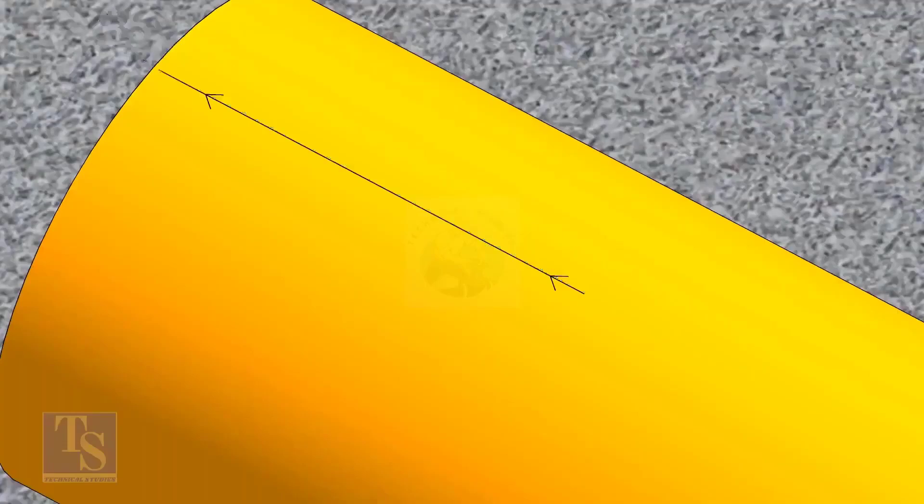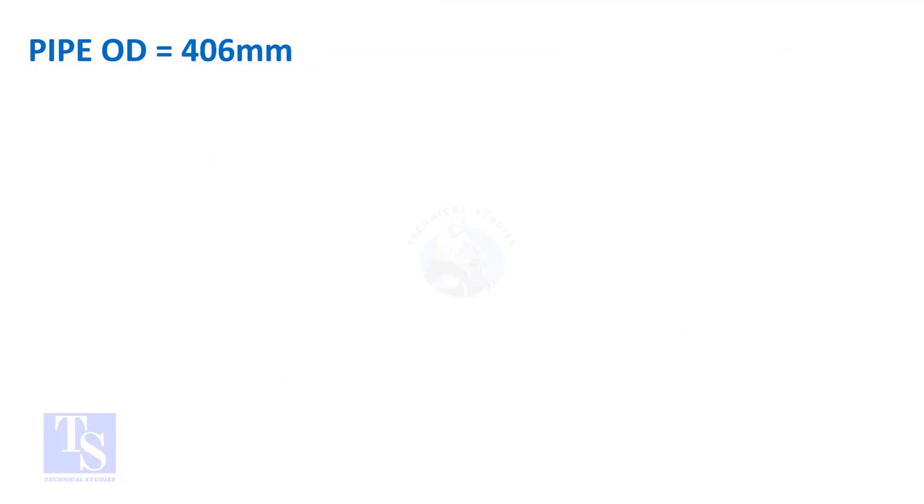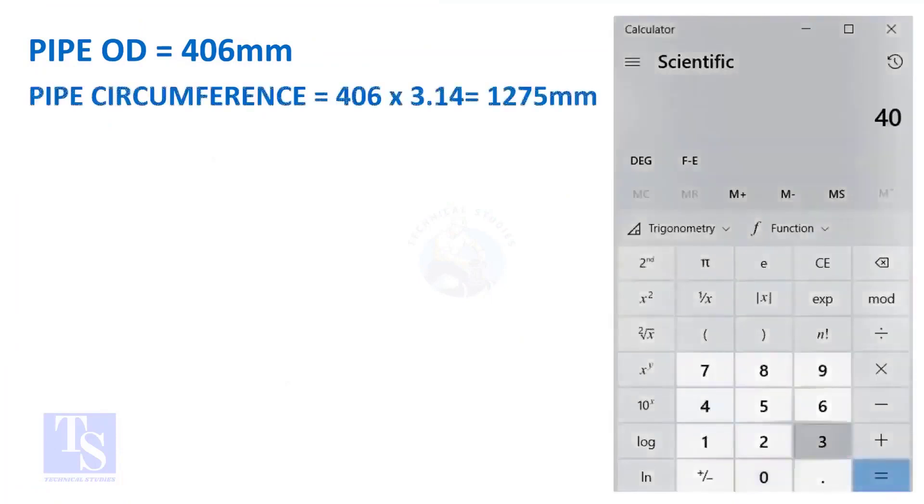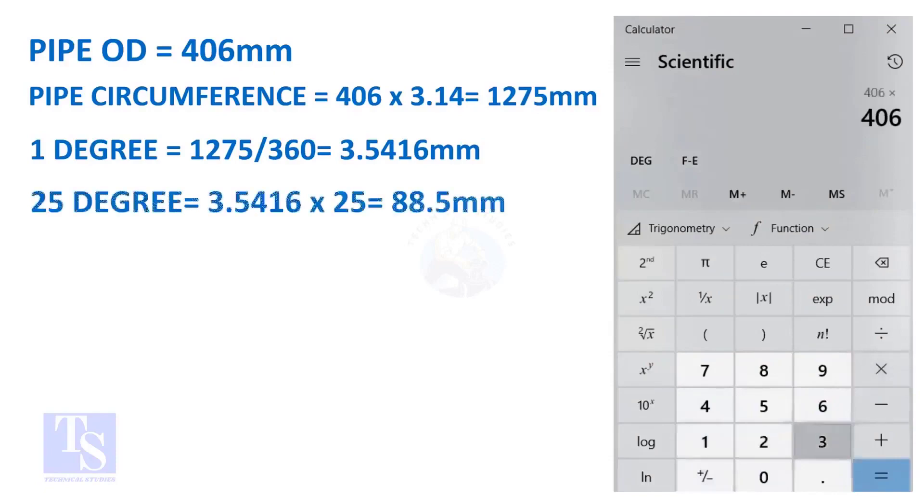Let us calculate the circumferential distance or arc length for 25 degrees. Multiply the OD by 3.14 and you will get the circumference of the pipe. Divide the circumference by 360 and you will get the arc length of 1 degree.